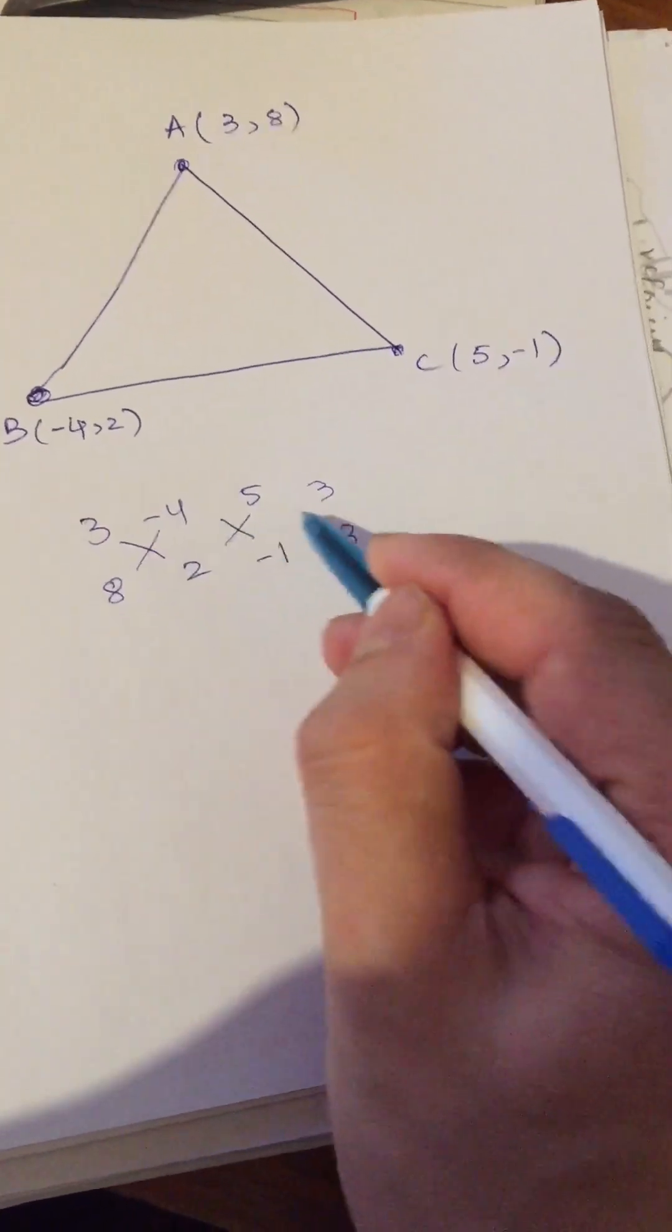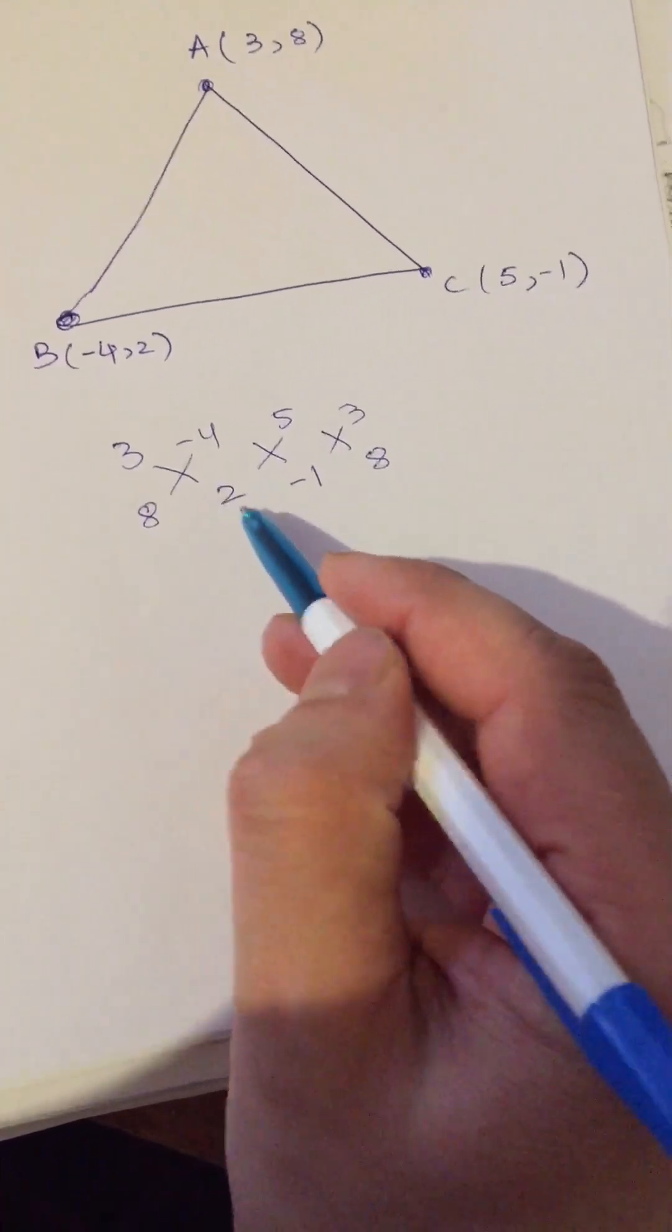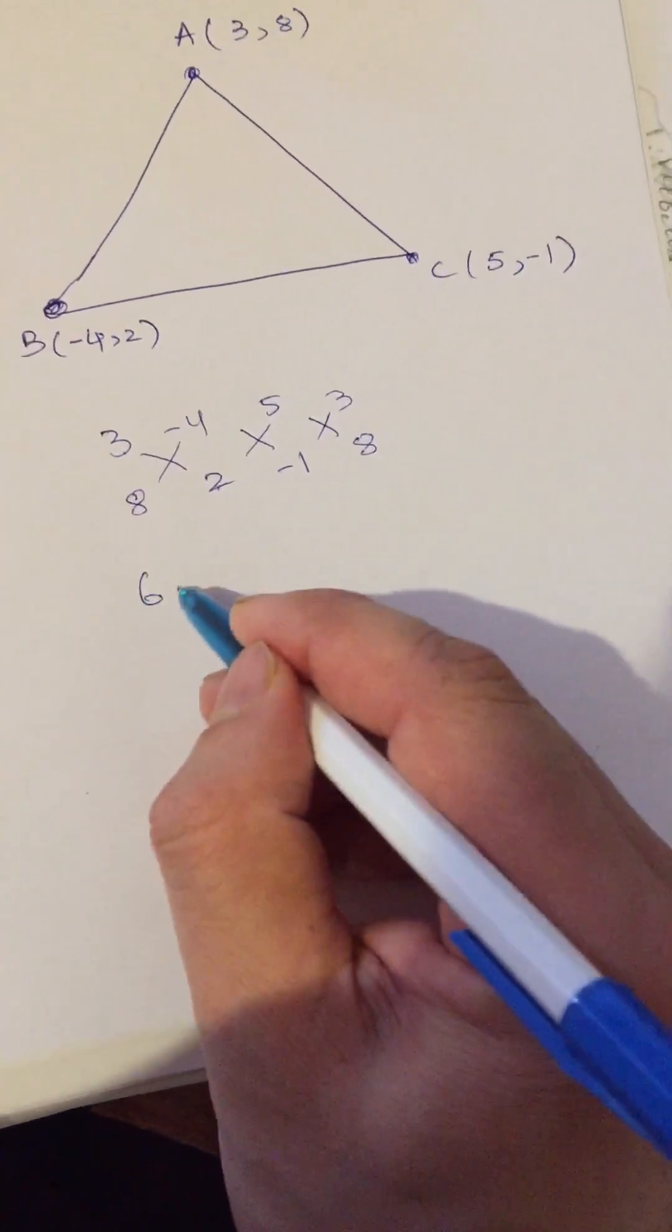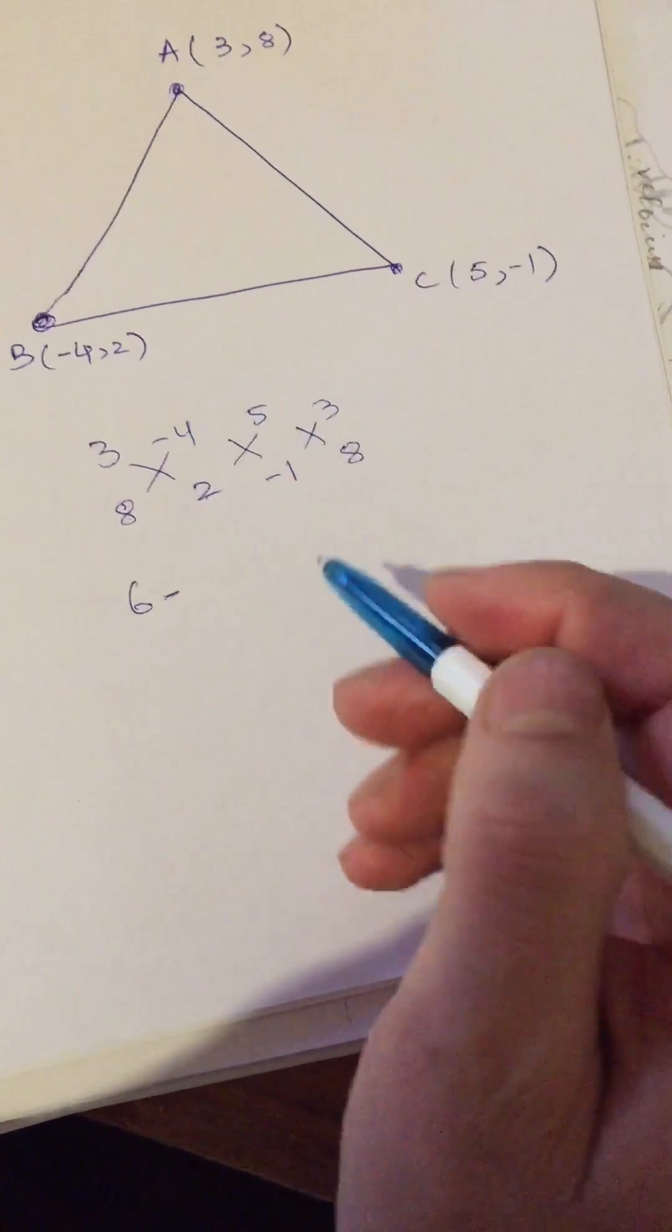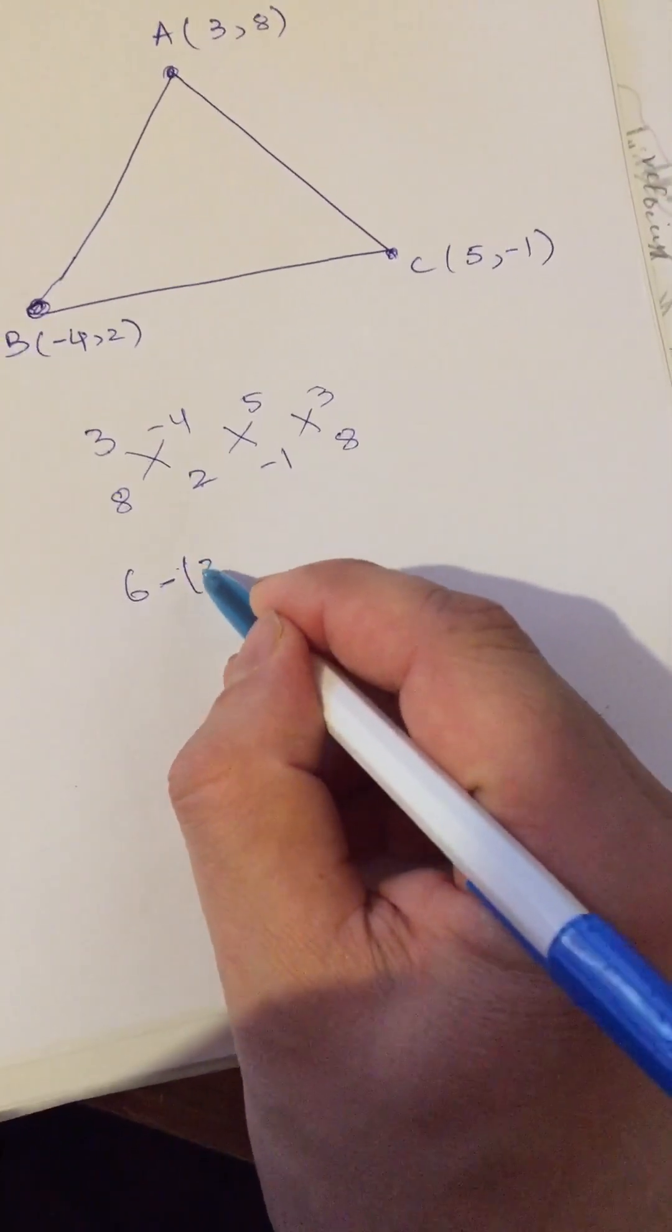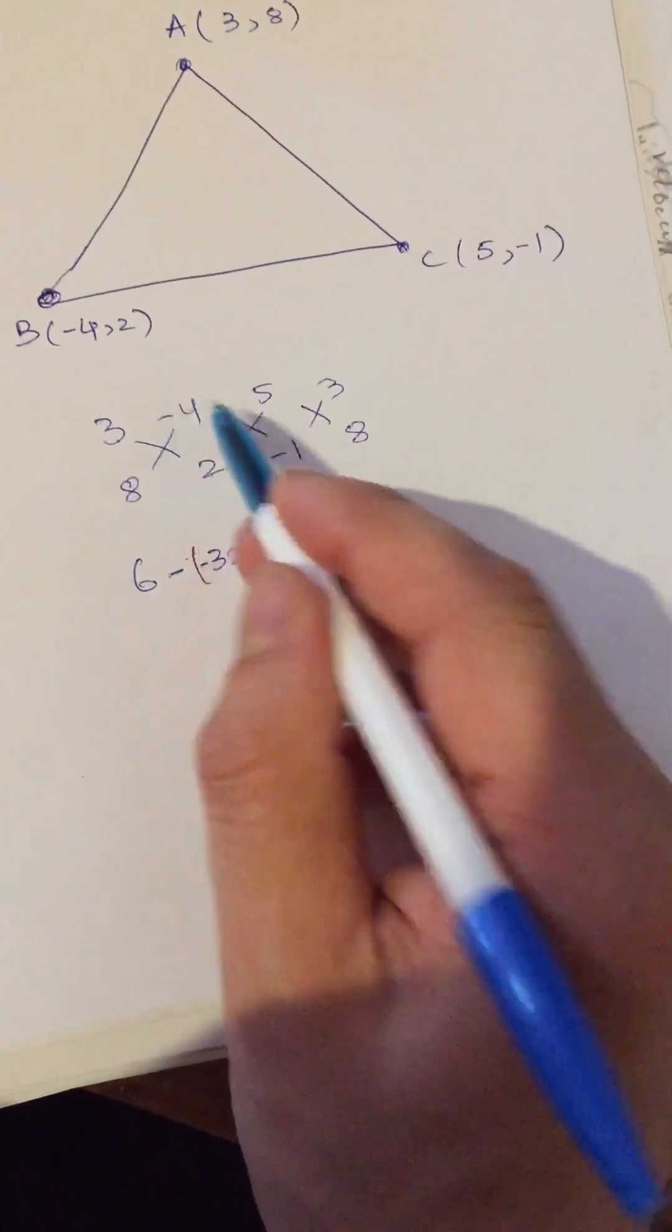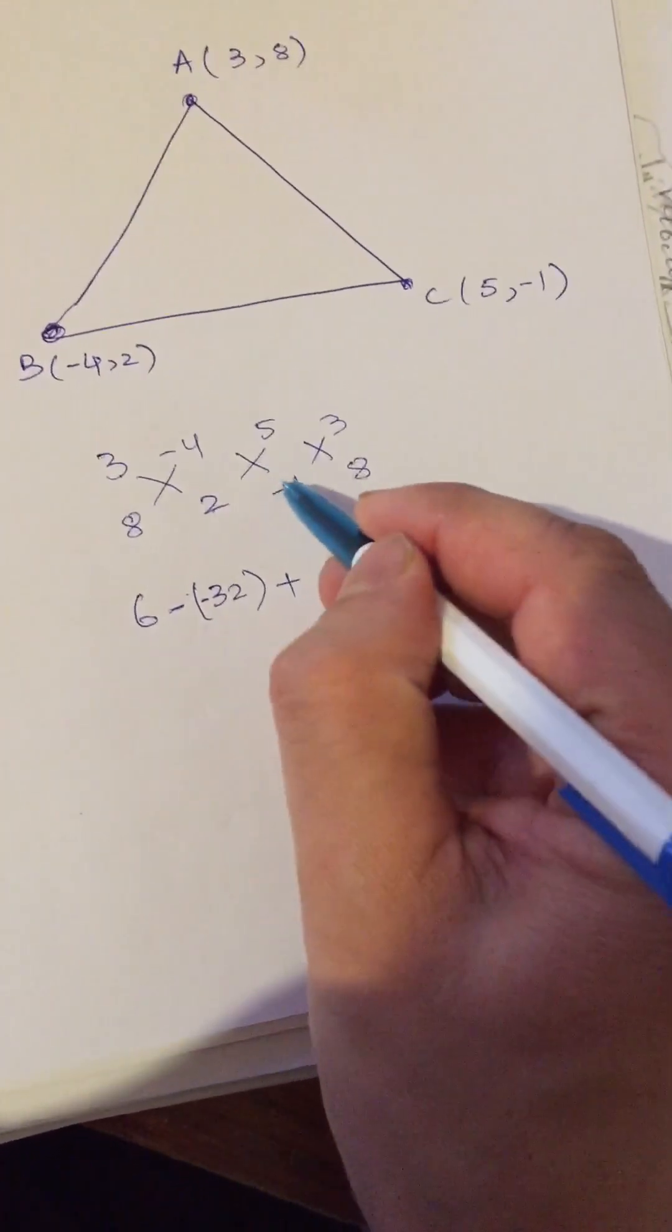What do you have to do? As we cross multiply, we have to do 2 into 3, it is 6. Then we have minus 8 into 4, it is 32, but it is minus 32 because the sign of 4 is minus, then it is plus.